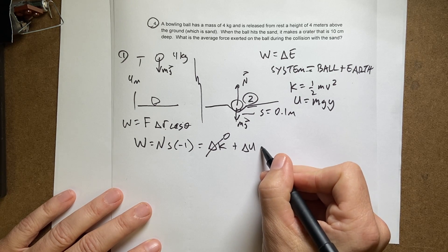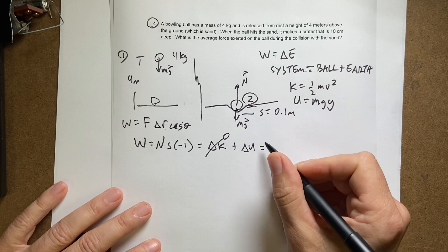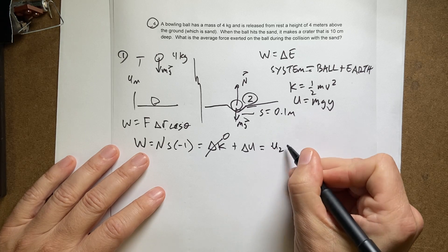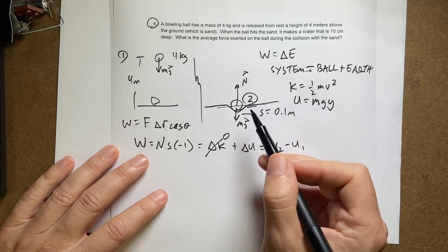So now I just have the change in gravitational potential energy. It's going to be equal to the final potential U2 minus initial potential U1. So let me call this the origin where it stops. So that means that U2 is zero.